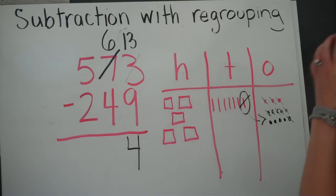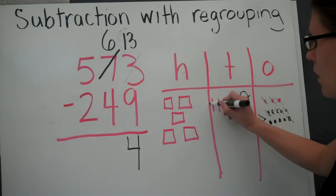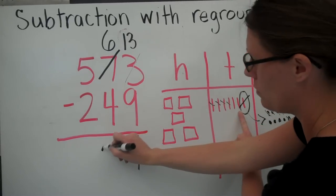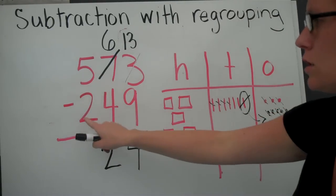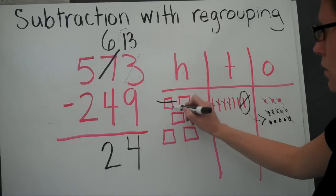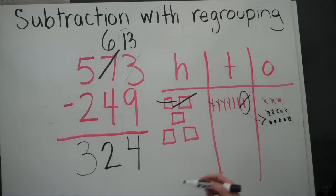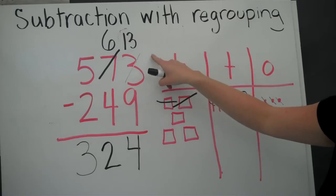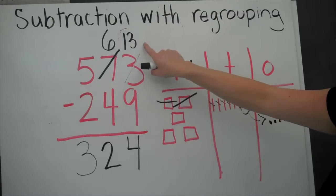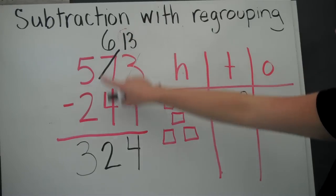Now I move on to the tens column. 6 minus 4. I have 6 tens, I want to take 4 away. I end up with 2 tens left. Now I'm going to move on to 5 minus 2. I have 5 hundreds, I'm going to take away 2 hundreds, and I'm left with 3 hundreds. My answer is 324. What I did was I regrouped — I took 1 ten and put it into the ones column to make 13 ones minus 9, and then I could do 6 tens minus 4 tens.